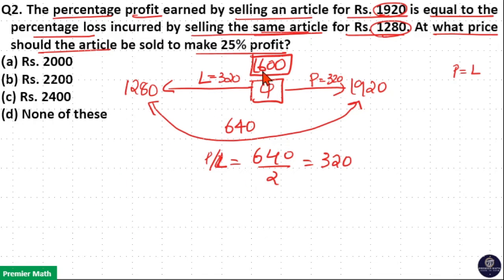Now 25 percentage of 1600 is 1 by 4 of 1600. So selling price to get 25 percentage profit is equal to 1600 plus 1 by 4 of 1600, or 25 percentage of 1600, which is equal to 400. So which is equal to 2000.